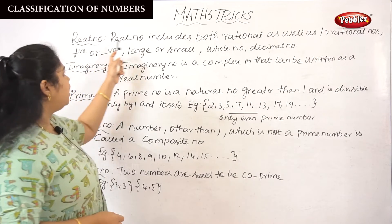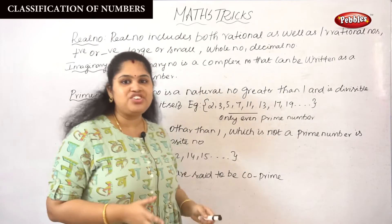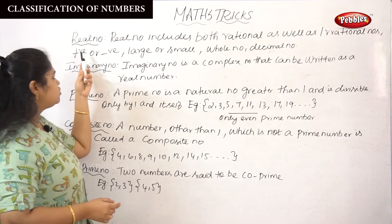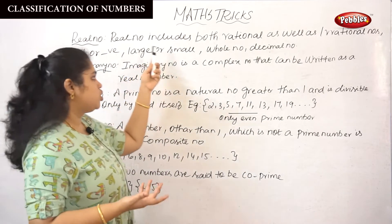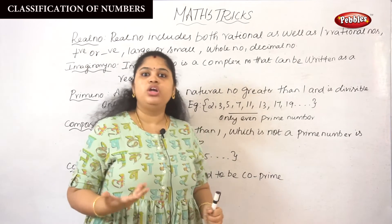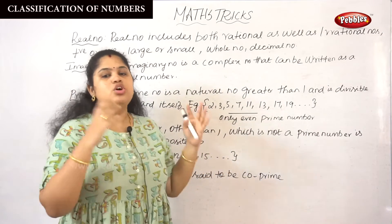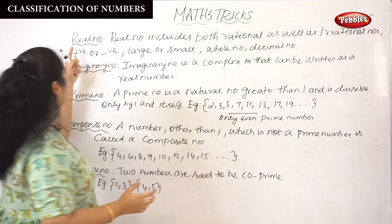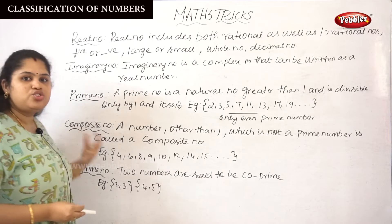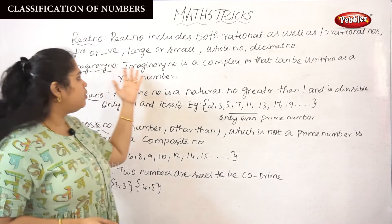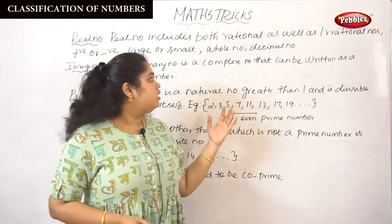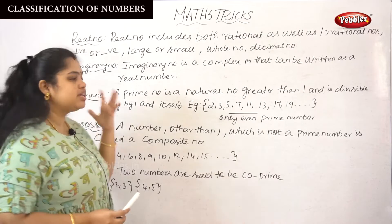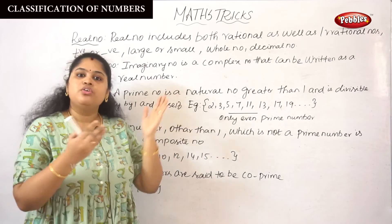Next, real number. Real number includes both rational as well as irrational numbers. It may be positive or negative, large or small, a whole number or a decimal number. The collection of rational and irrational numbers is called a real number. Next, imaginary number — an imaginary number is a complex number that can be written as a real number.